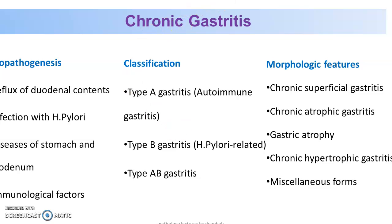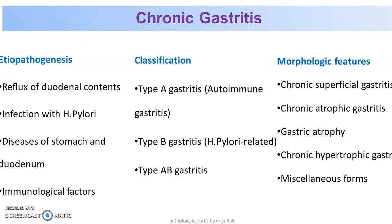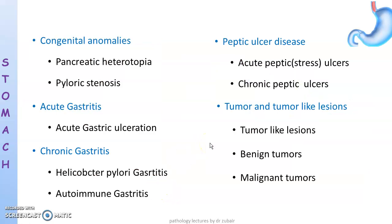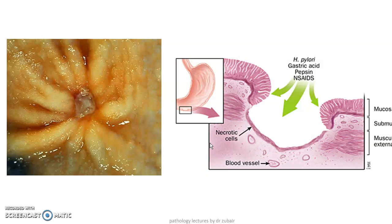To summarize gastritis: etiopathogenesis includes reflux of duodenal contents, infection with H. pylori, diseases of the stomach and duodenum, and immunological factors. Classification is type A, type B, and type AB gastritis. Morphological features are chronic superficial, chronic atrophic, gastric atrophy, chronic hypertrophic, and miscellaneous forms. In the next lecture, peptic ulcer — the sequel of chronic gastritis — will be discussed in detail.